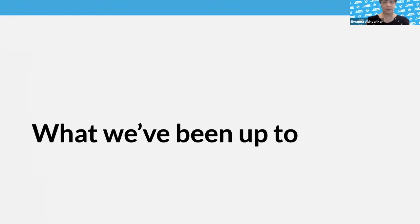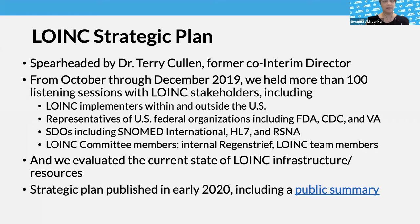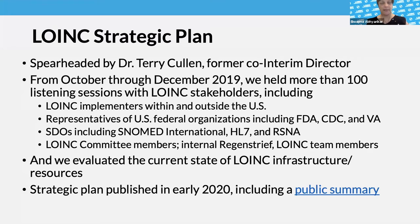What have we been up to? Our last in-person meeting was about a year ago, so I'll start back then. We worked on a strategic plan, spearheaded by Terry Cullen, who was my co-interim director for about eight or nine months. From October through December of 2019, we held listening sessions with more than 100 different stakeholders — individuals and groups — anyone who uses or has a stake in LOINC. We evaluated the current state of LOINC technology, infrastructure, and resources, then published the strategic plan in early 2020. There's a public summary available, linked in the slides.